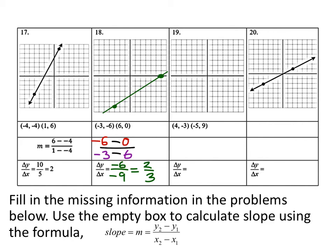On number nineteen, I'll do the graph first and then find the slope. Starting with four, negative three — that's this point. Then negative five and nine, which would be up here somewhere, off the grid, but we can still graph this approximately. For the slope, the y values are negative three and nine, and the x values are four and negative five. So negative three minus nine is negative twelve, and four minus negative five is four plus five — that's positive nine. This simplifies to negative four-thirds.